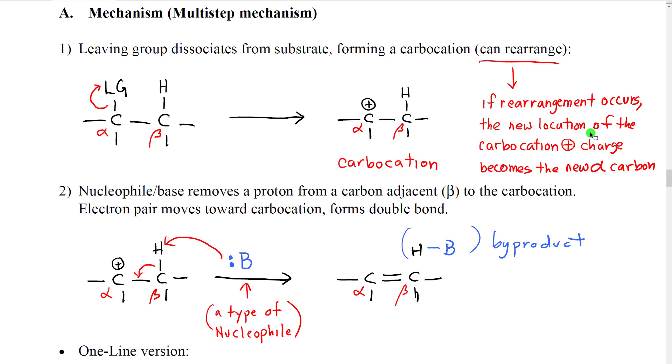If rearrangement occurs, then we move the location of the carbocation in the skeleton and that new carbocation location becomes a new alpha carbon. The old alpha carbon is no longer alpha.